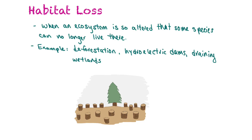Another threat to biodiversity is habitat loss, which is when an ecosystem is so altered that some species can no longer live there. Examples include deforestation, building a hydroelectric dam, and draining a wetland to build a subdivision — those are all examples of habitat loss.